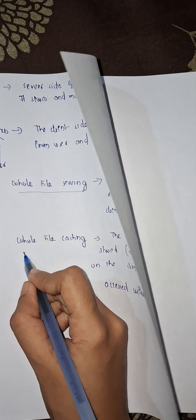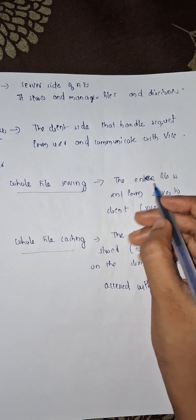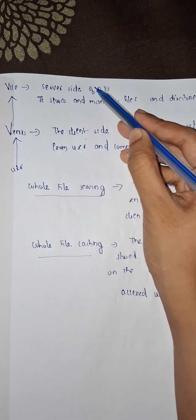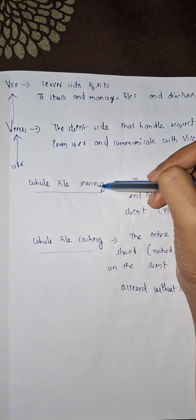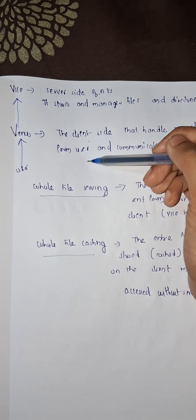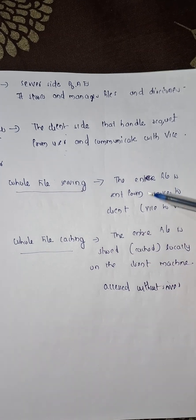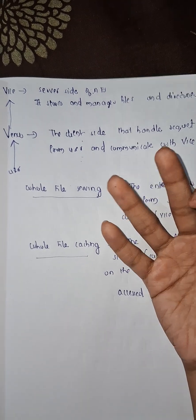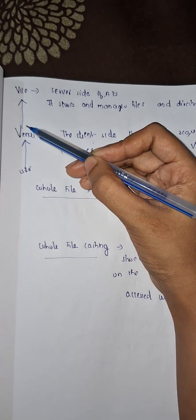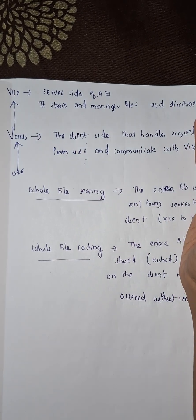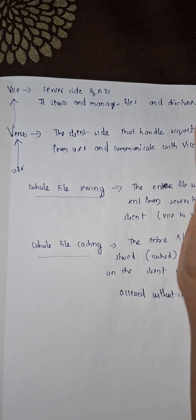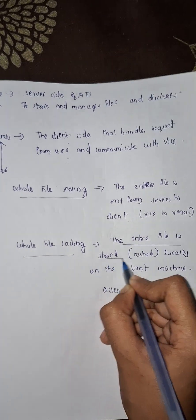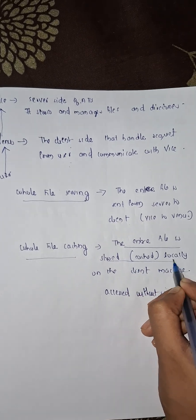This is whole file serving versus whole file caching. Whole file serving is when the entire file is sent from the server to the client — that is Vise to Venus. Whole file caching is when the file is stored and cached locally in the client machine.